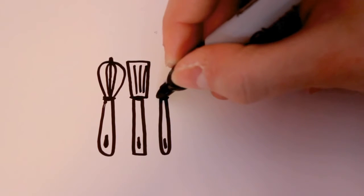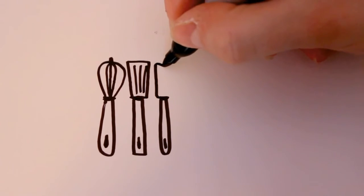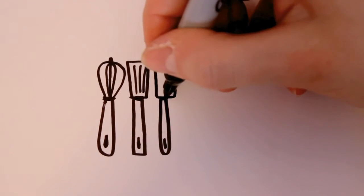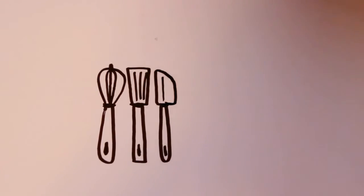The last one is going to be a spatula, which is just a straight line that branches out and curves on one side. For detailing, I'm just going to add one line in there.